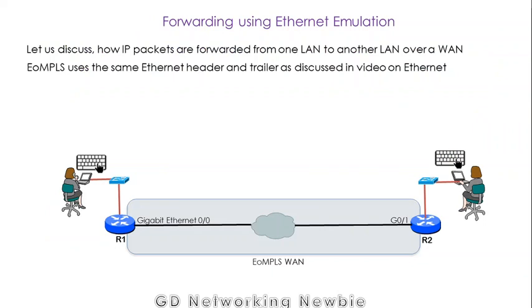After discussing these names, let's discuss how packets are forwarded from one local area network to another local area network using this wide area network technology — specifically EoMPLS, Ethernet over MPLS, which we will examine as a basic Ethernet service.